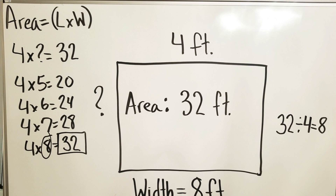I know that four times five is 20, so I can just count on until I get to 32. Four times six is 24, four times seven is 28, four times eight — that's 32. So four times eight is 32, meaning eight is my missing side. The width of our box is eight feet.